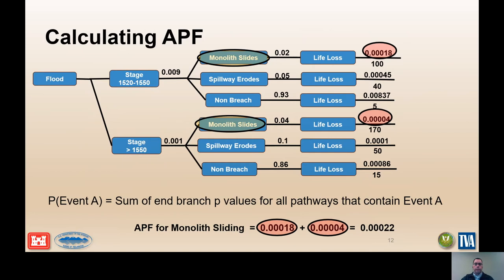In the simple event tree example, there are four pathways that lead to breach. Probabilities along each pathway are multiplied for each end branch that results in breach. The annual probability of failure for a potential failure mode is the sum of the end-branch probabilities. For monolith sliding, the annual probability of failure is the sum of 0.00018 and 0.0004. The annual probability of failure for spillway erosion is obtained in a similar manner, and the total annual probability of failure is the sum of all failure end branches, as shown at the bottom of the slide.